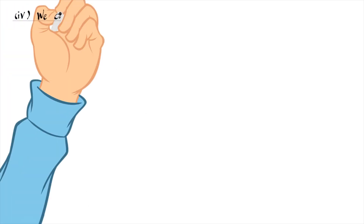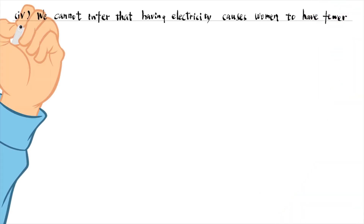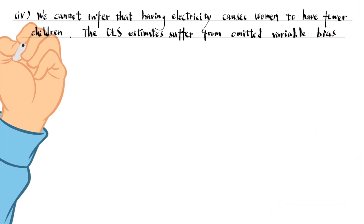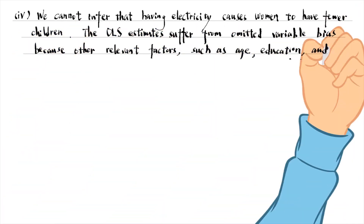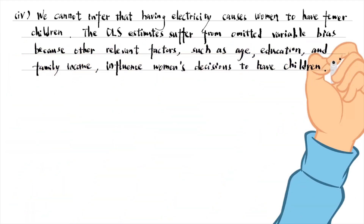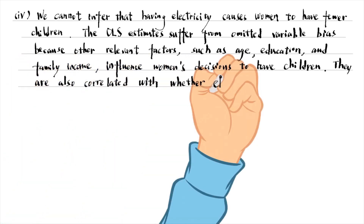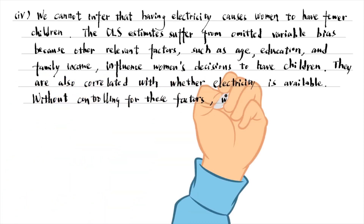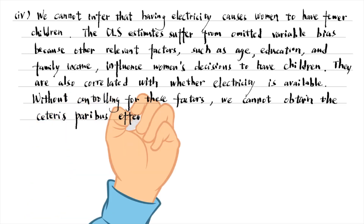In part 4, we cannot infer that having electricity causes women to have fewer children. The OLS estimates suffer from omitted variable bias because other relevant factors such as age, education, and family income influence women's decisions to have children. They are also correlated with whether electricity is available. Without controlling for these factors, we cannot obtain the causal effect of having electricity on fertility.